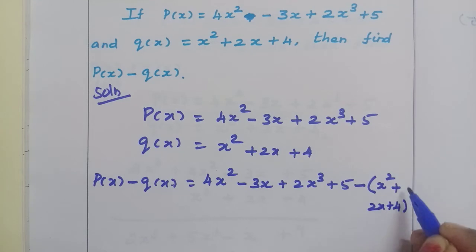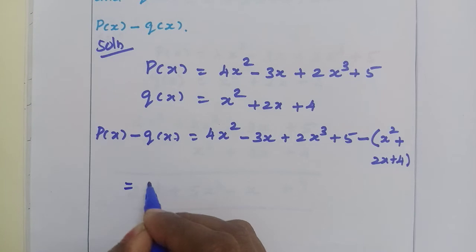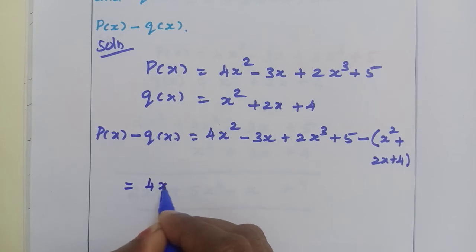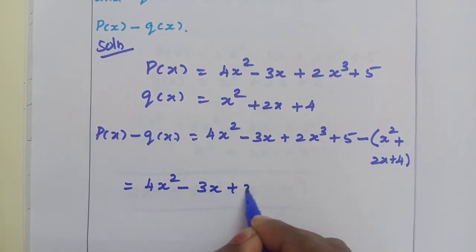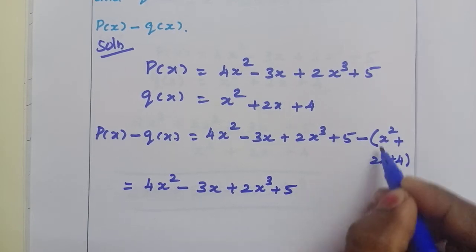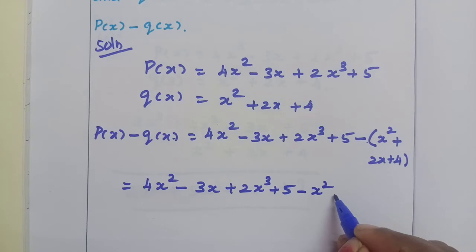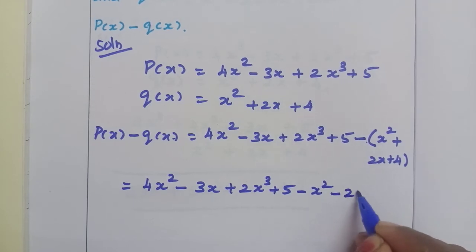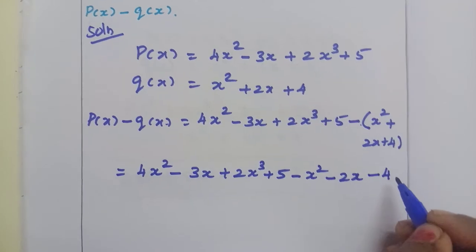Now, these three terms are multiplied by the minus symbol. So, equal to 4x squared minus 3x plus 2x cubed plus 5, minus x squared, minus 2x, minus 4.